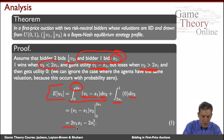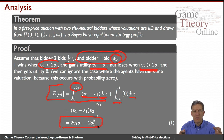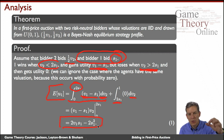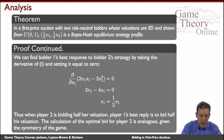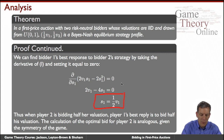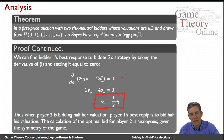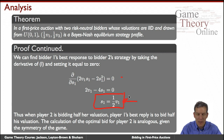Integrating that expression gives expected utility equal to 2V1·S1 minus 2S1². Differentiating with respect to S1 and setting equal to zero, we find S1 = V1/2 as the solution. So checking second-order conditions, the optimal bid — given that the other person is bidding half their value — is to bid half your own value as well.